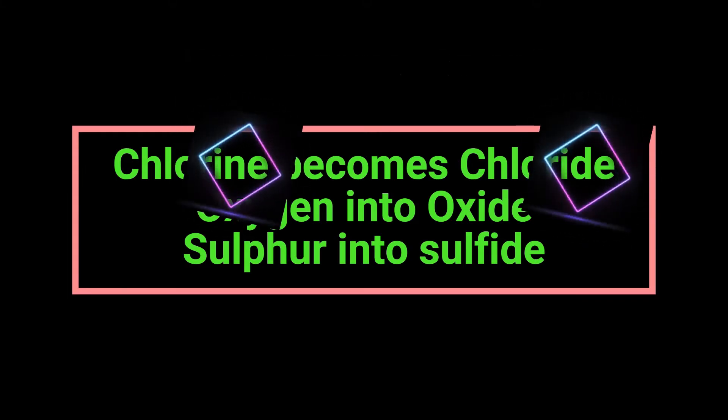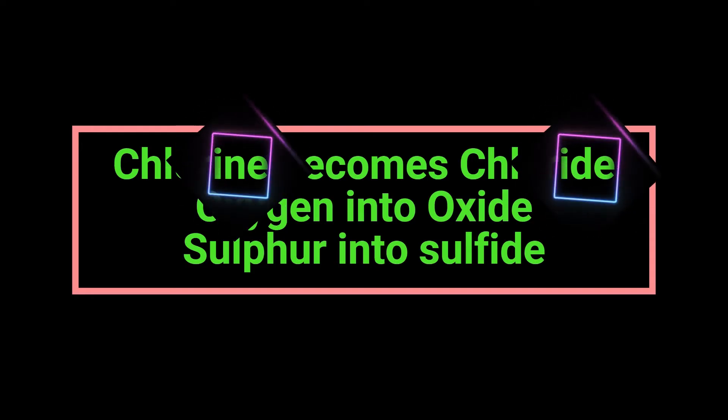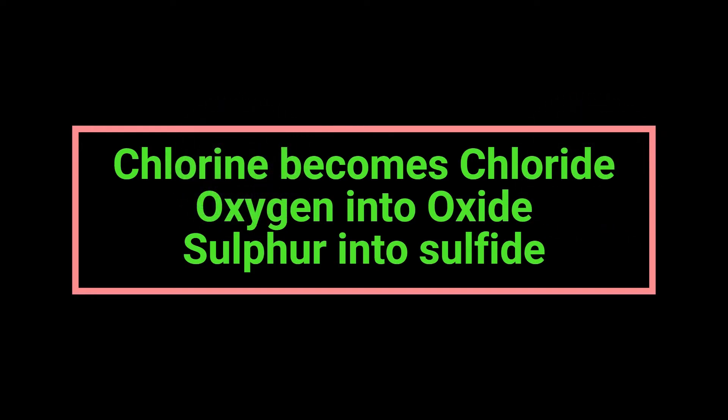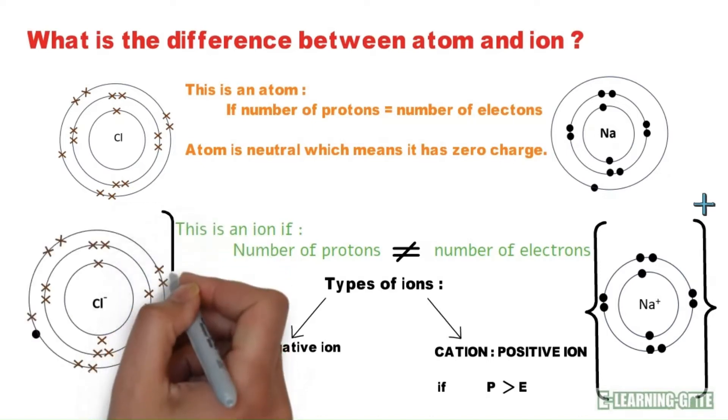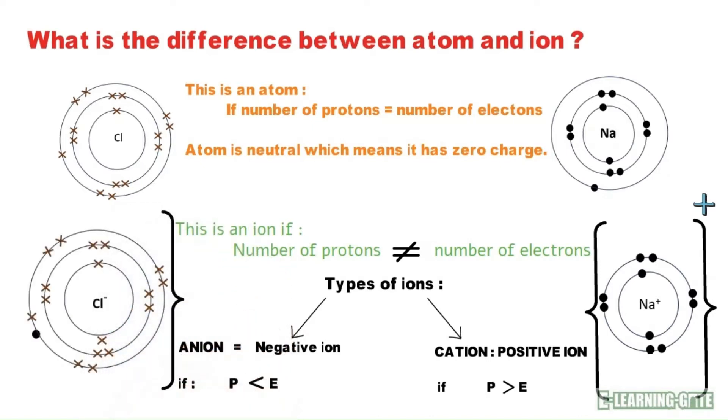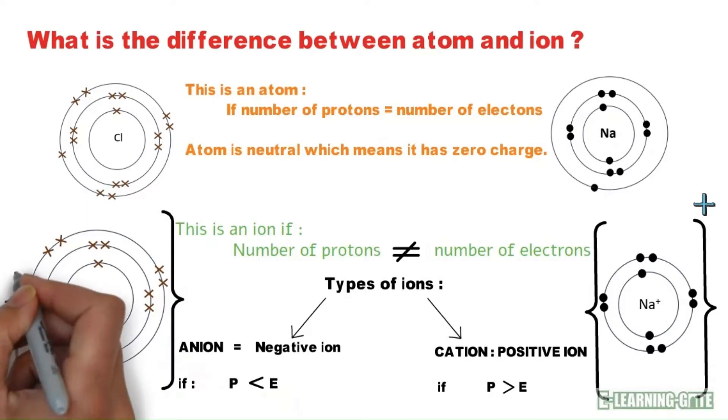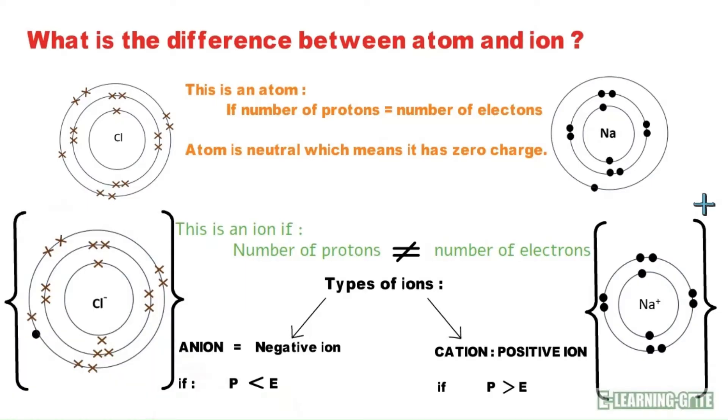For example, chlorine becomes chloride, oxygen becomes oxide, sulfur becomes sulfide. This is chloride, not chlorine. Compare chlorine with chloride.